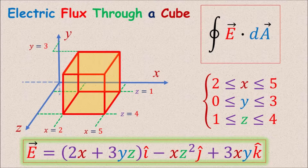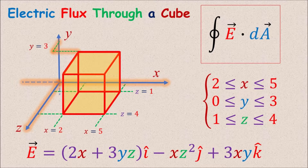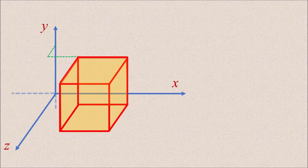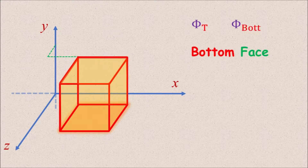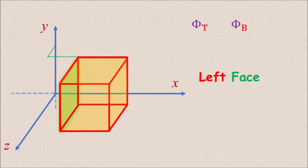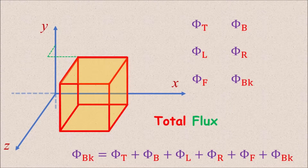Here is the electric field we use as an example. This is a vector field whose components change in space with x, y, and z coordinates as given. The cube we use extends from x equal to 2 to x equal to 5, from y equal to 0 to y equal to 3, and from z equal to 1 to 4. We divide the flux through the surface of the whole cube into six parts going through the six faces: phi top (φ_T), phi bottom (φ_B), phi left (φ_L), phi right (φ_R), phi front (φ_F), and phi back (φ_BK). The total flux is the sum of all these pieces.